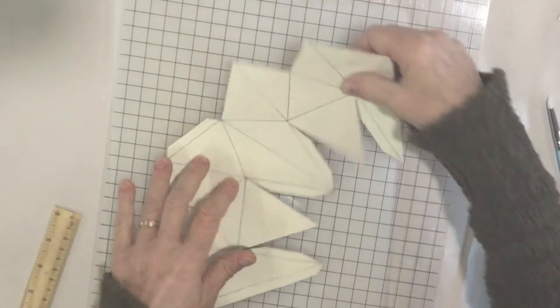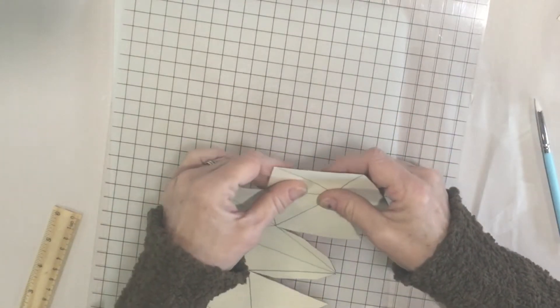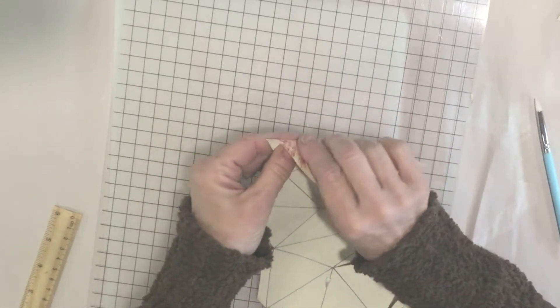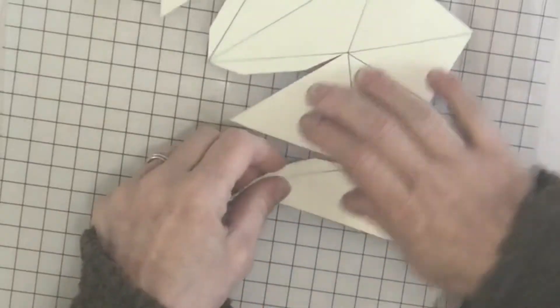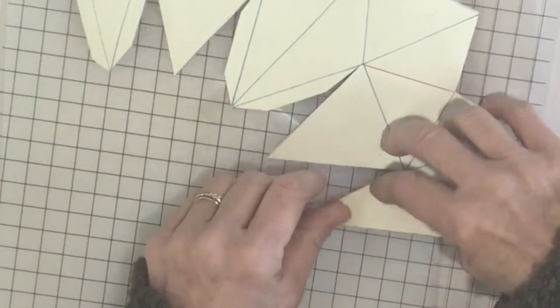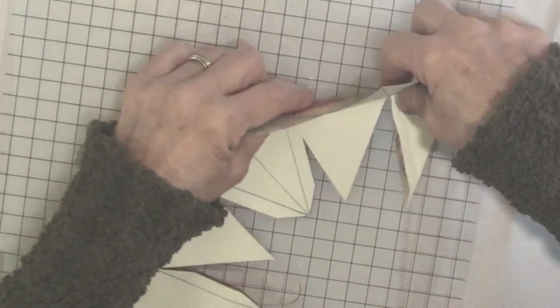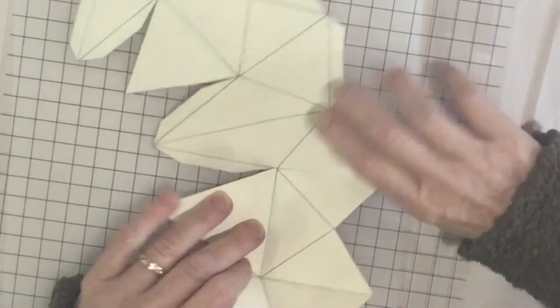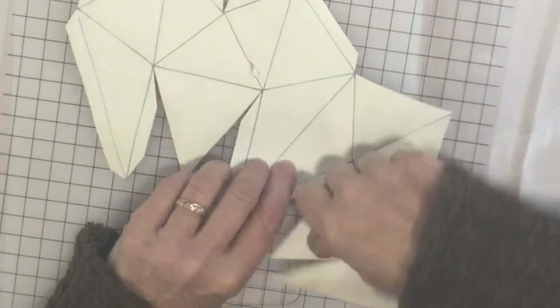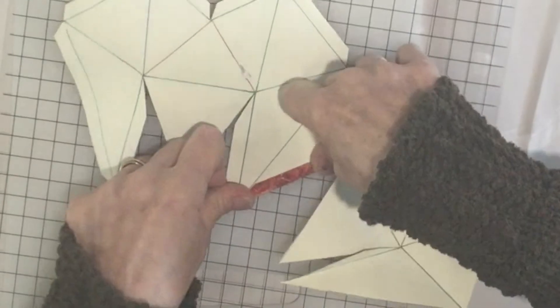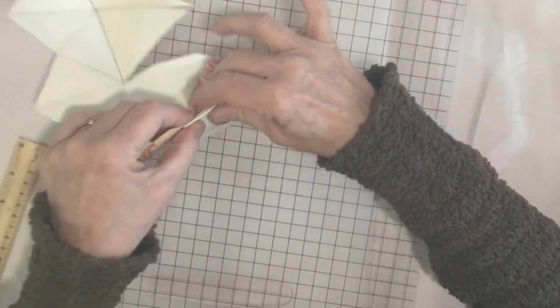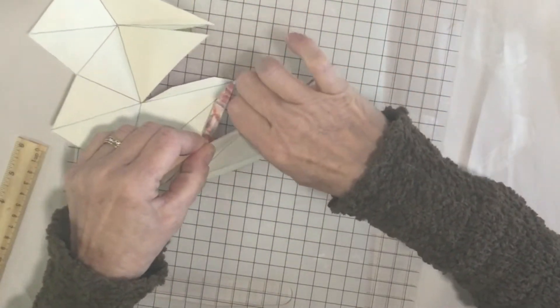After you've scored all this, now we already know that our blue lines are going to be valley folds so I'm going to bring those down so you have a little valley there. Actually most of these are valley folds, there's just a few mountain folds. You could just fold it without scoring it, I just find that it really comes out so much nicer if you've scored it first. For the mountain folds we're just bringing these back this way.